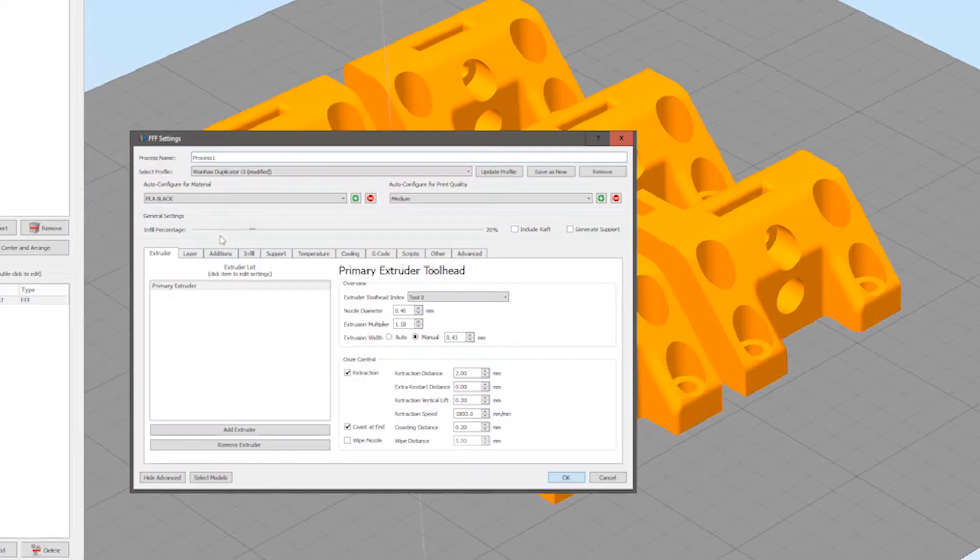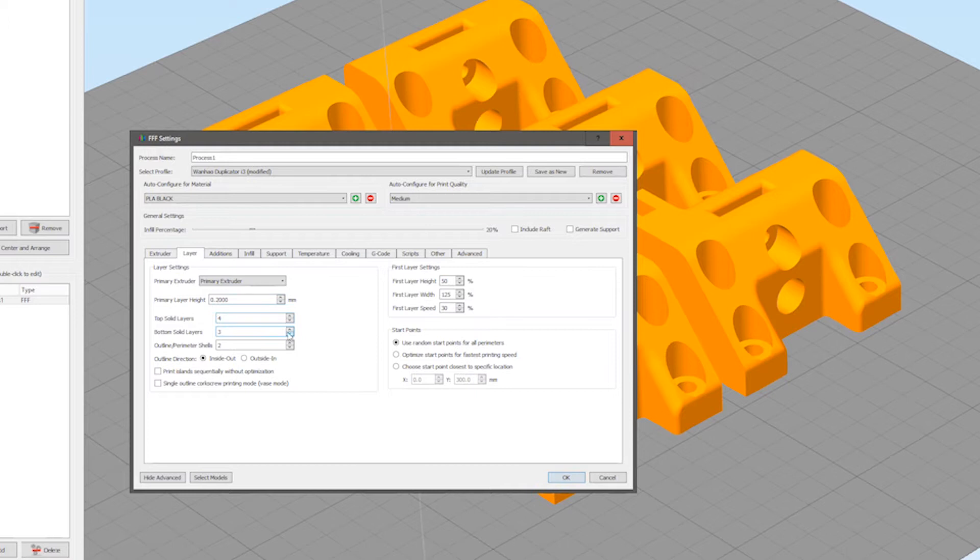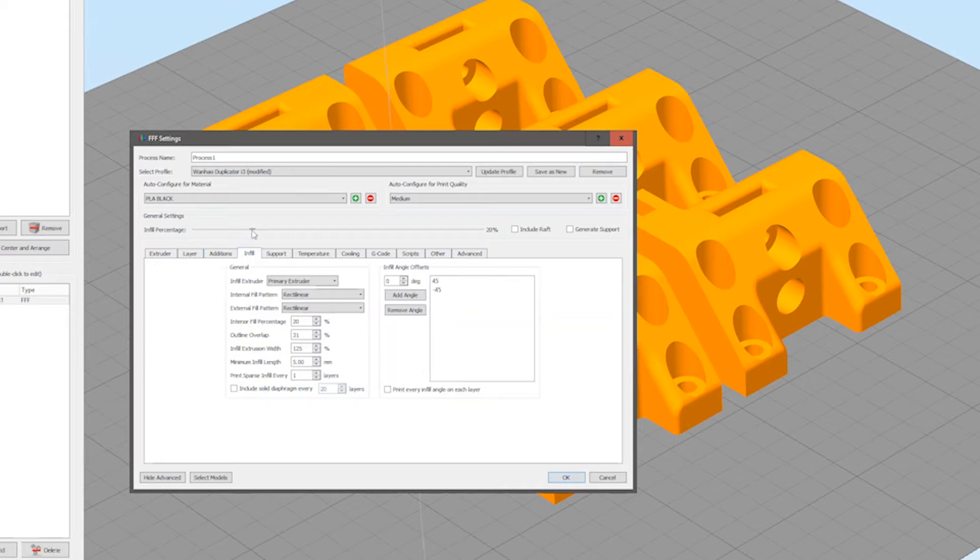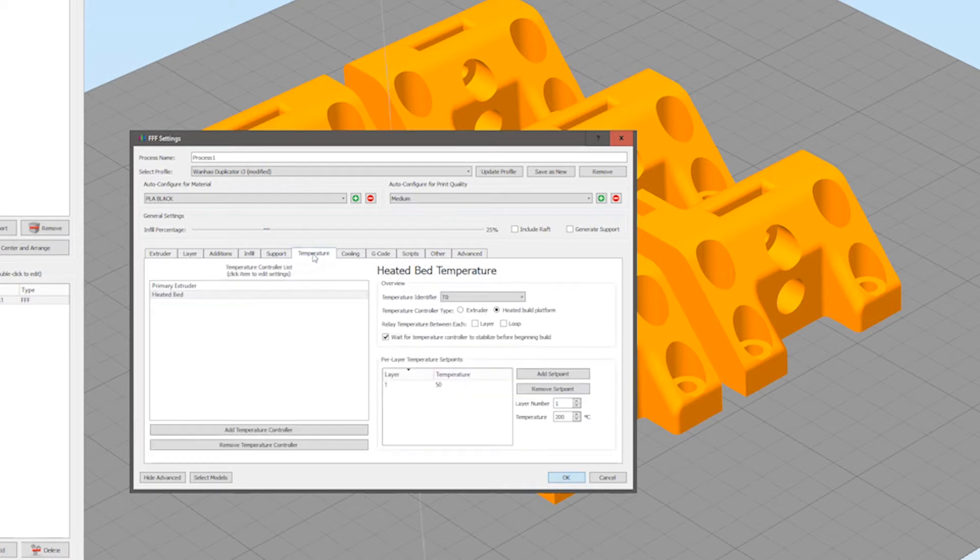The main settings that I used for these parts are a layer height of 0.2 mm, a bed temperature of 50 degrees Celsius, an extruder temperature of 225 degrees Celsius for the first 3 layers and 215 degrees Celsius for the rest of the print.